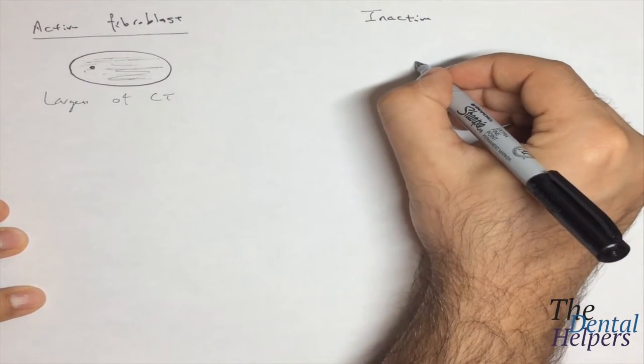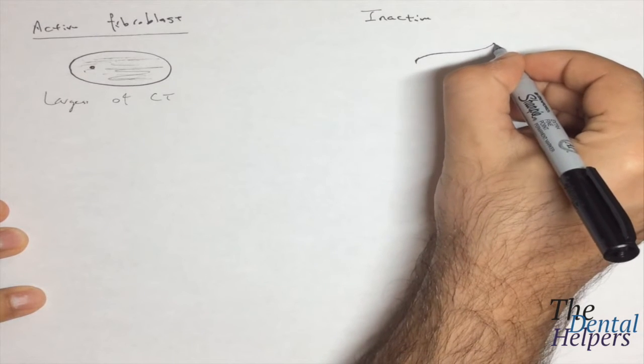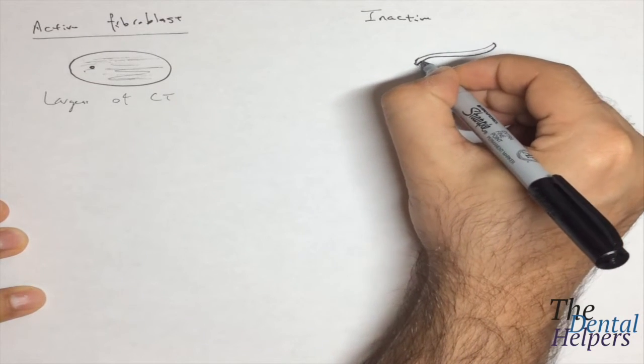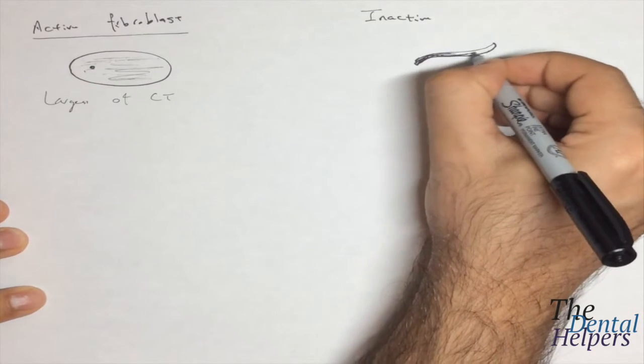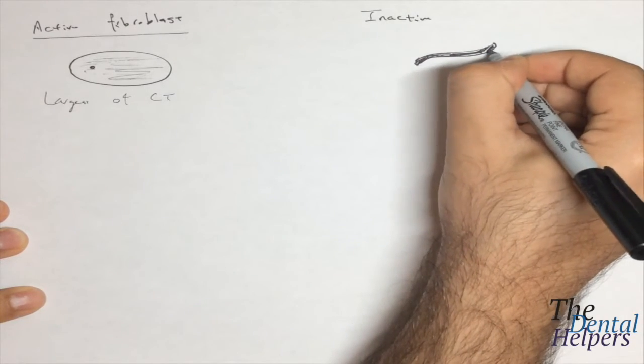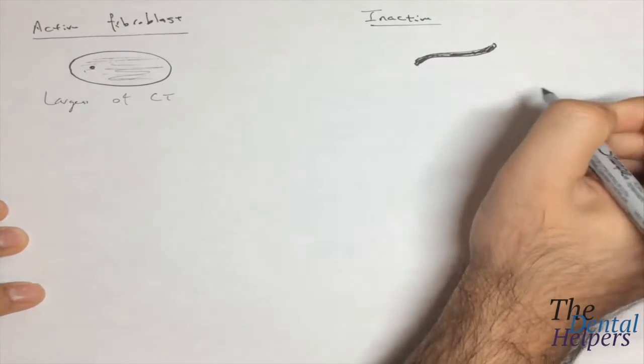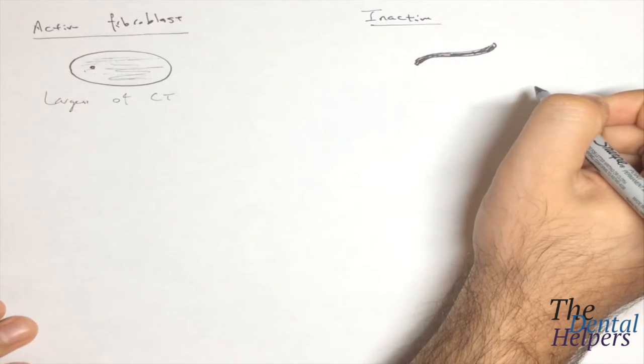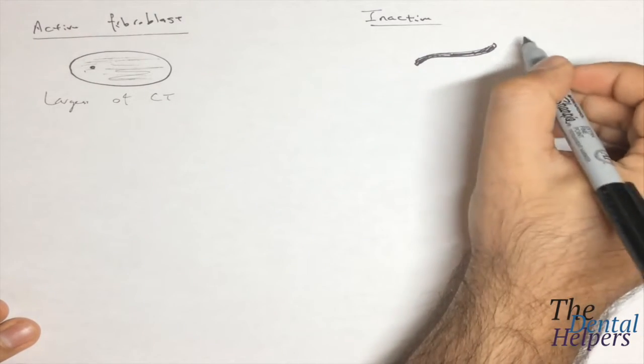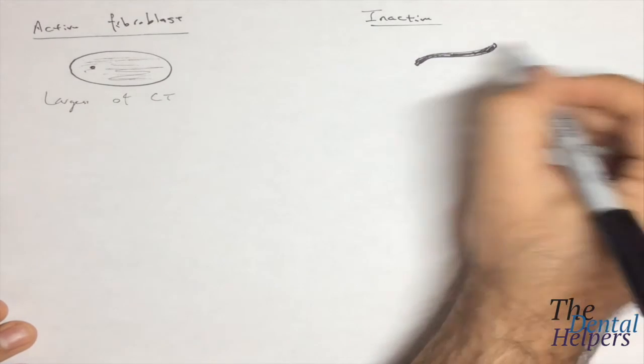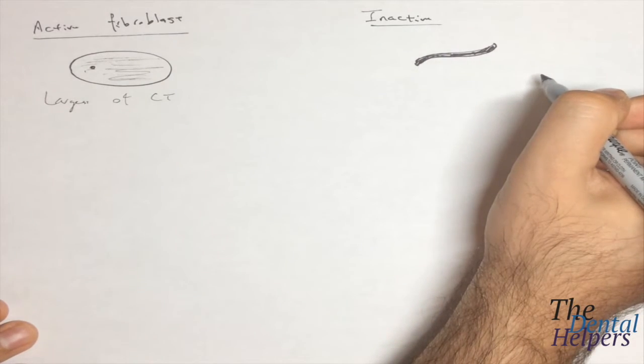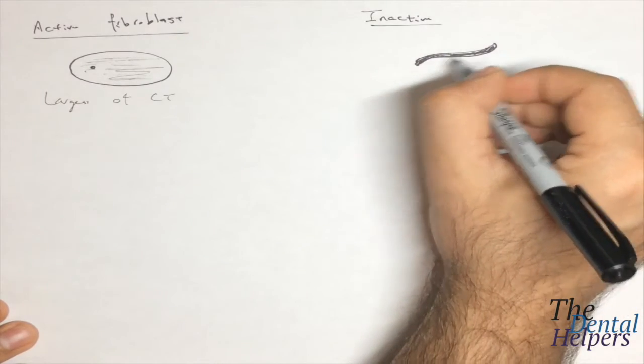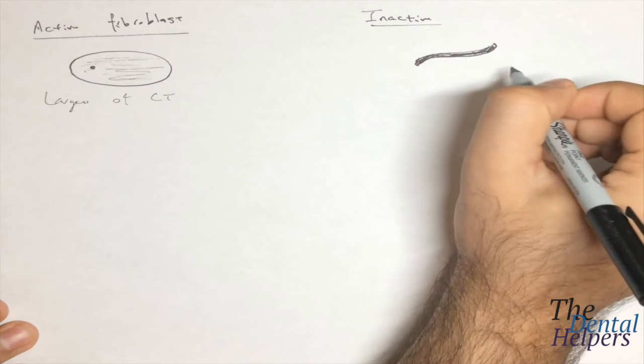Now if we look at the inactive form, it's going to be slightly different. It's going to kind of look like somebody got that active form and smashed it, so it almost looks like this strand of hair or spaghetti. The nucleus is just spindle-shaped, it's heterochromatic and it's very elongated.